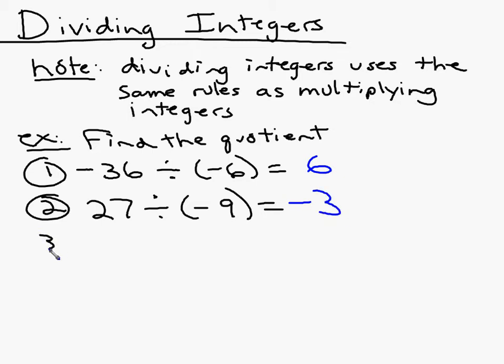Number 3, why don't you try this one on your own? Negative 42 divided by 7. Do that one on your own. It's on your paper. See if you get the right answer. Well, in this case, we have a negative divided by a positive, so my answer is going to be negative 6.